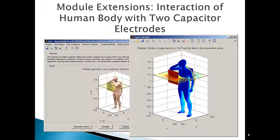A natural extension of the module is the interaction of a human body, which is a third conducting object, with two charge capacitor electrodes, as displayed in this figure.